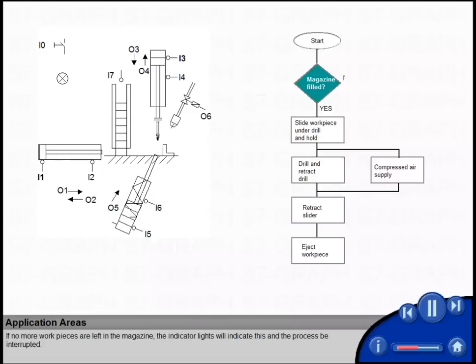If no more workpieces are left in the magazine, the indicator lights will indicate this, and the process be interrupted.